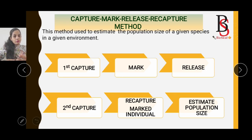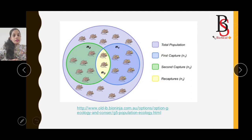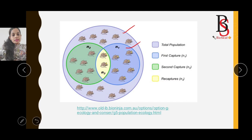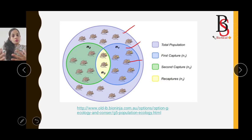By applying a simple mathematical formula we can estimate the population size. In the diagram, it represents a population of mice as the total population. The first step is to capture N1 — the first capture — where some mice are captured and marked or tagged with yellow color. After marking, they are released back into the total population so they can mix with unmarked individuals.